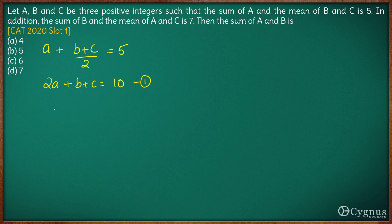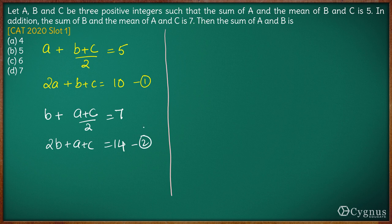Next, in addition the sum of b and the mean of a and c. So b plus a plus c by 2, this is equal to 7. Again multiplying by 2 we have 2b plus a plus c is equal to 14. Let us call this as the second equation.